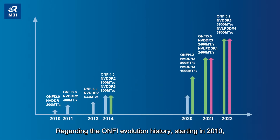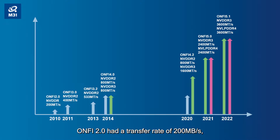Regarding the ONV evolution history, starting in 2010, ONV 2.0 had a transfer rate of 200 MB per second. And in 2021, ONV 5.0 reached 2.4 GB per second.